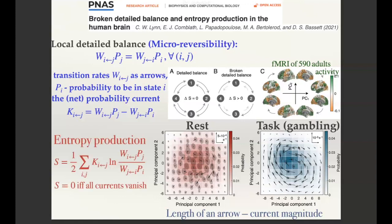From this microscopic knowledge of the current, they can compute the so-called entropy production. You can think of it as a measure of how irreversible the system is. The higher S is, the more irreversible the system is. If S equals zero, all microscopic currents vanish and you restore detailed balance.